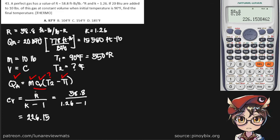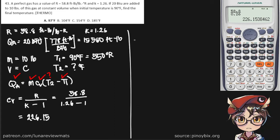Putting that in our calculator, we get a Cv of 226.15. Now we have everything we need to find the final temperature. We start putting our values in: 10 pounds times 226.15 — which has the same units as the gas constant.